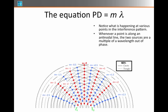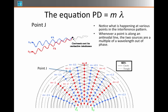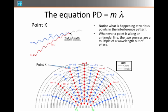Let's notice what happens at various locations along the interference pattern. Whenever a point is along an antinodal line, the two sources are a multiple of wavelengths out of phase. At point J, on the m equals minus one line, S1 is six wavelengths away and S2 is seven wavelengths away. These two waves arrive in phase — crests meet crests — which is what we expect at an antinode. Similarly, point K, further out on that same line, is six and a half wavelengths from S1 and seven and a half from S2, so a trough meets a trough, again confirming constructive interference.